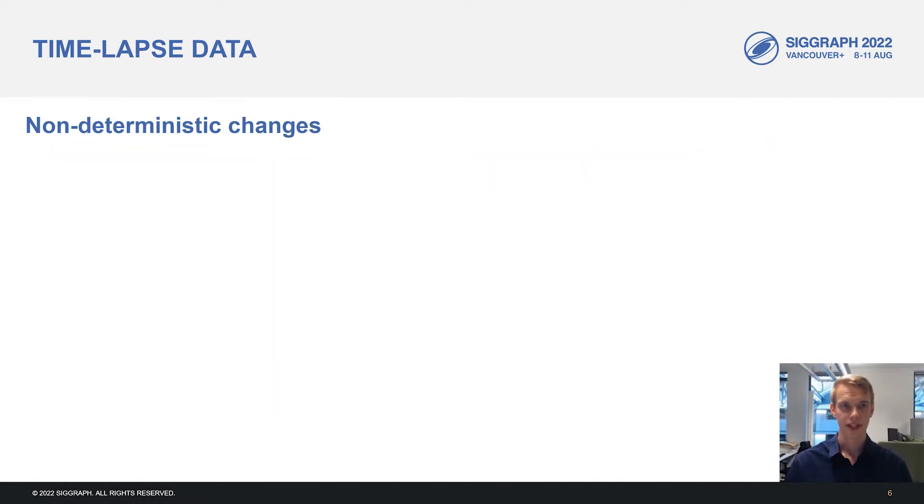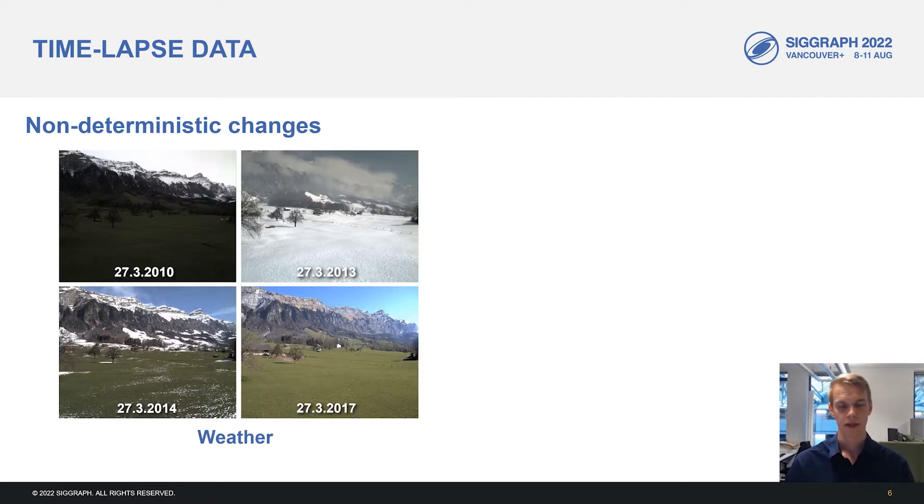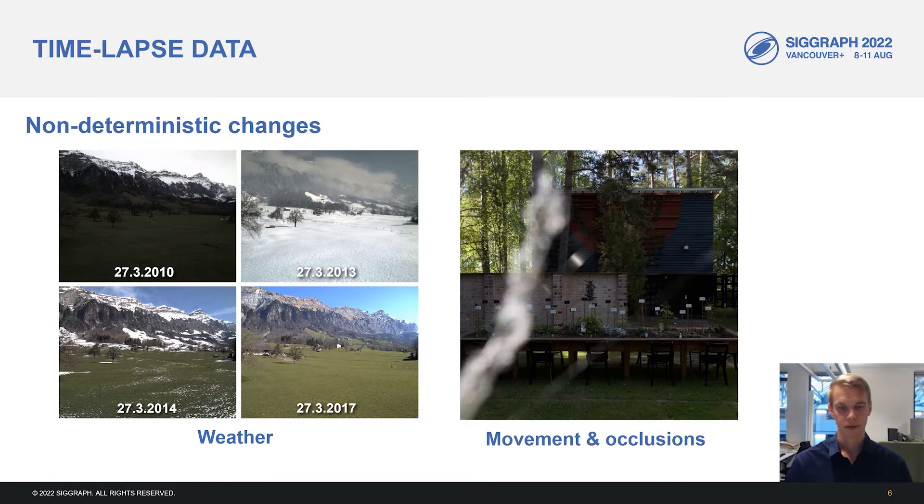Finally, we have non-deterministic changes that cannot be explained by the cyclic or trend parts alone. The weather is one source of randomness. Here we have four images captured at the same time of day on different years. We can see that at the end of March, the appearance of the frame can vary quite drastically.